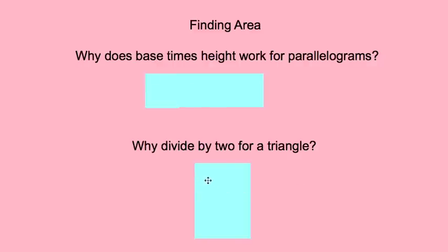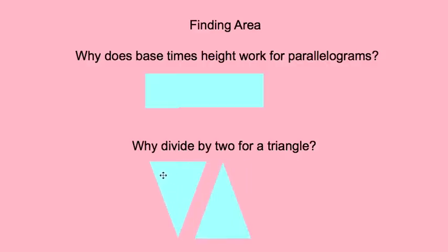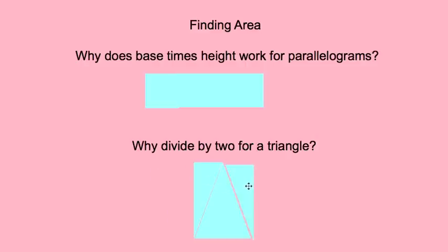So why do we divide by two when there's a triangle? Inside a rectangle there are two exactly equal-area triangles. If I move some pieces away and reconfigure them, you can see there are two exactly the same size triangles inside of a rectangle. So if we find the area of a rectangle and then divide by two, it will give us the area of that triangle.